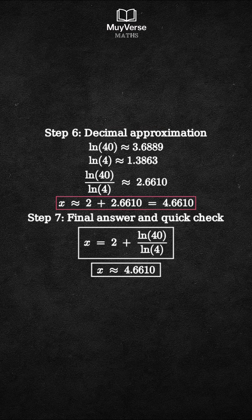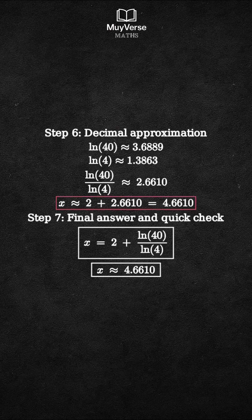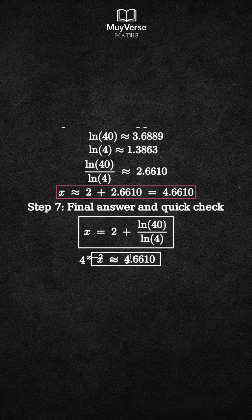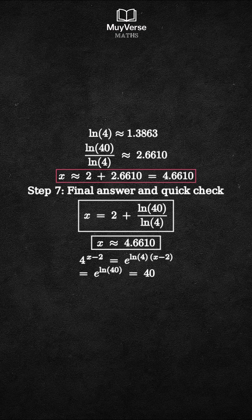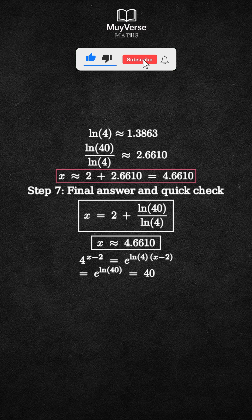Quick check: 4 to the power x minus 2 equals e to the power natural log 4 times x minus 2, which equals e to the power natural log 40, which is 40. This confirms our steps. Solved completely.